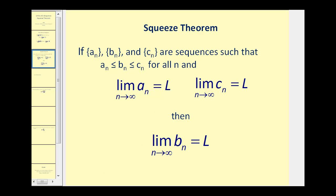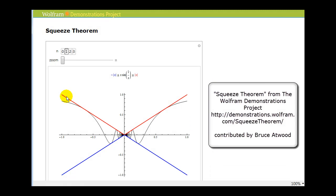Let's take a look at this graphically. For example, we defined two functions — one in red and one in blue — that sandwich the function in black. The black function is always less than or equal to the red function and greater than or equal to the blue function. If the limit as x approaches zero equals zero for both the red and the blue function, and the black function is always between the two, the limit of the black function will also equal zero as x approaches zero.